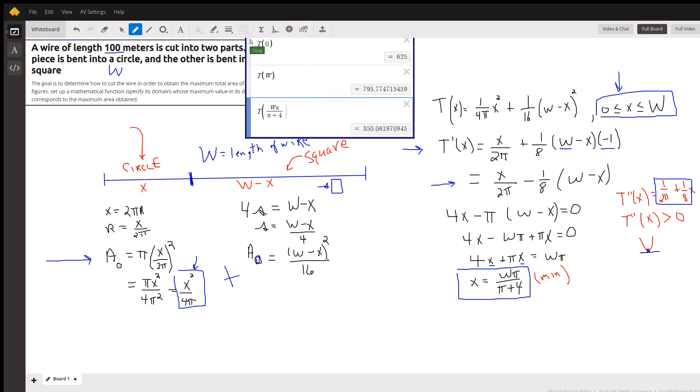That's the relative minimum right there, that's the minimum area that occurs when you cut the wire so that you get 100π over π plus 4.